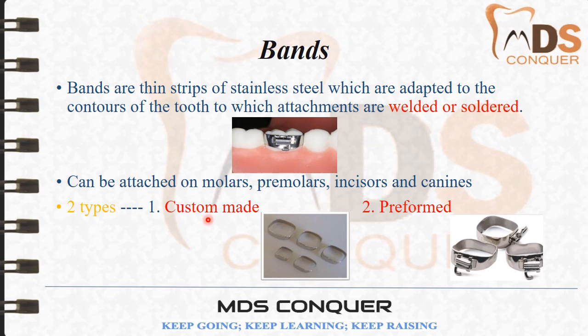Custom-made bands are a thin strip of metal contoured around the molar or premolar and then cemented. Preformed bands are available in different sizes, ready to be cemented — they are checked for size, placed on the teeth, and later cemented.